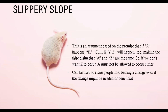The slippery slope logical fallacy is an argument based on the premise that if A happens, B, C, X, Y, and Z will happen too, making the false claim that A and Z are equivalent. So if we don't want Z to occur, A must not be allowed to occur either. This is dangerous because it can be used to scare people into fearing a change, even if the change might be needed or beneficial.